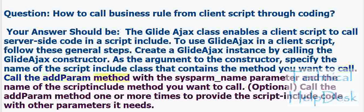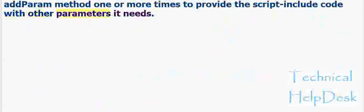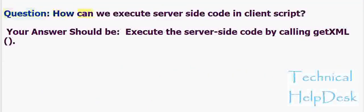Call the addParam method with the sysparm_name parameter and the name of the script include method you want to call. Optionally, call the addParam method one or more times to provide the script include code with other parameters it needs. Question: How can we execute server-side code in a client script? Answer: Execute the server-side code by calling getXML.